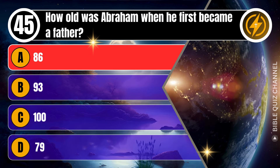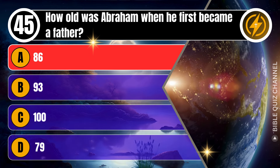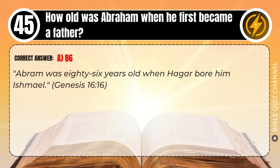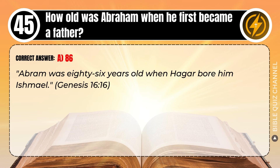Correct answer: A. 86. Explaining the Bible — Abram was 86 years old when Hagar bore him Ishmael. Genesis, chapter 16, verse 16.